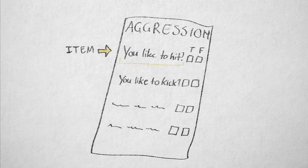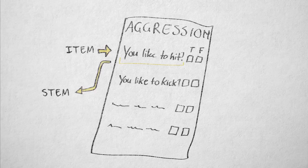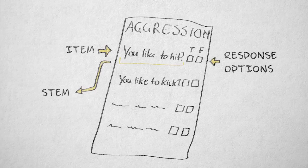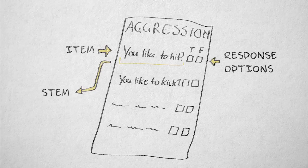The question, statement, or word that a participant has to respond to is called the stem. The stem is usually accompanied by a set of discrete response options, or a continuous range to choose from.